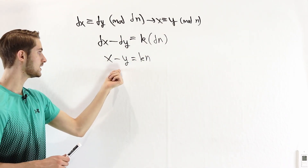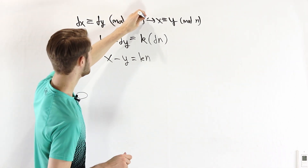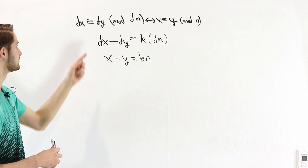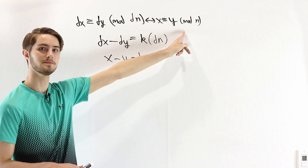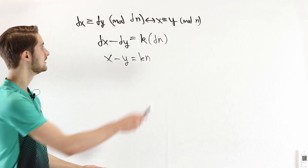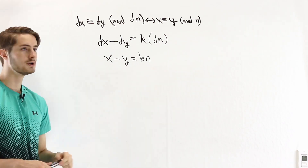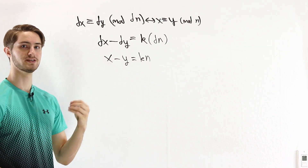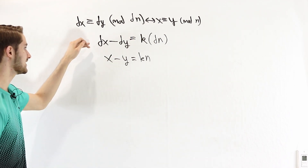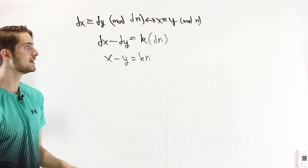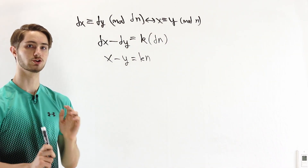Notice this is actually a biconditional. We proved that dx ≡ dy mod dn implies x ≡ y mod n. But we can also go the other way: if x ≡ y mod n, then x − y = k·n, and multiplying by d gives dx − dy = k·dn, which means dx ≡ dy mod dn. So these two congruences are exactly equivalent.